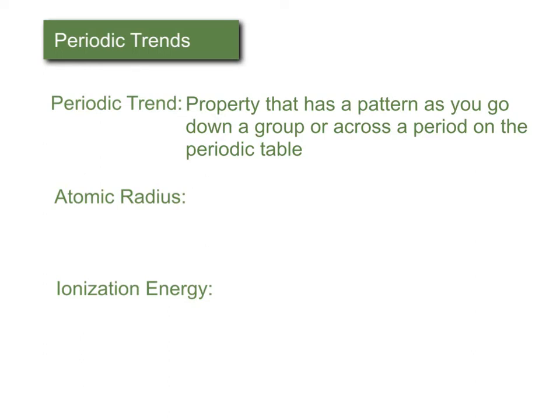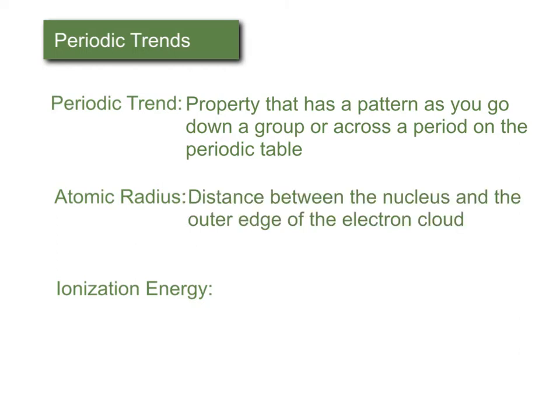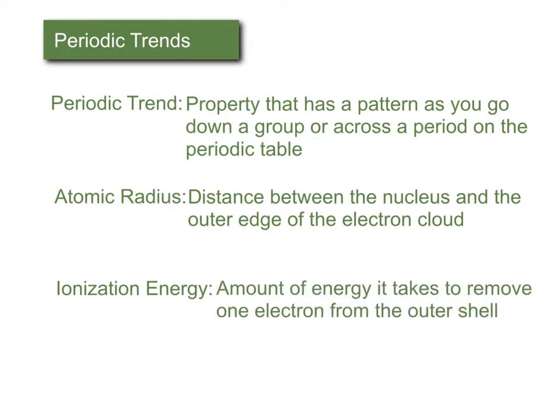The two properties that we're interested in for periodic trends in this class are atomic radius and ionization energy. The radius of an atom is the distance from the nucleus to the outer edge of the electron cloud. And the ionization energy is the amount of energy required to remove an electron from the outer shell of an atom.